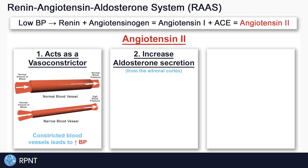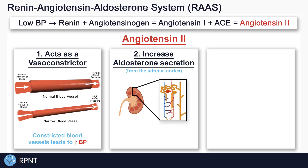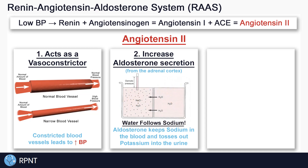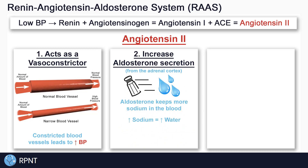Second, angiotensin-2 also increases the secretion of aldosterone from the adrenal cortex. Aldosterone is a hormone that acts in the nephrons, which are the functional units of the kidneys. Basically, aldosterone keeps sodium in the blood while tossing potassium out into the urine. This is really important because of the relationship between sodium and water — water wants to go wherever sodium goes. You can think of water as being really clingy to sodium. So aldosterone keeps more sodium in the blood, more sodium means more water in the blood, which means a higher blood volume, and a higher blood volume leads to a higher blood pressure.